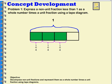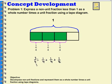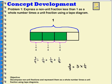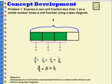So I could say that three-fourths is equal to one-fourth plus one-fourth plus one-fourth. But notice that I have one-fourth three times, so I could think of this as multiplication as well. I could say that three-fourths is equal to three times one-fourth.